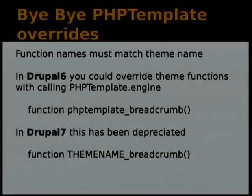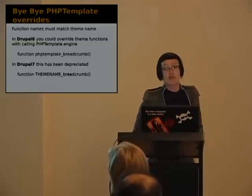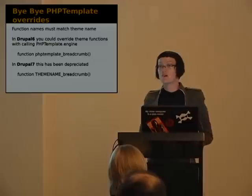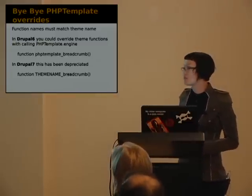Bye-bye PHP template overrides. In Drupal 6 you could override by calling phptemplate underscore breadcrumb through the theming engine. That has been deprecated completely in Drupal 7. You now need to call function theme_name underscore breadcrumb. Drupal 6 did support theme_name underscore breadcrumb, but it also had the old PHP template call as well — that's no longer used.